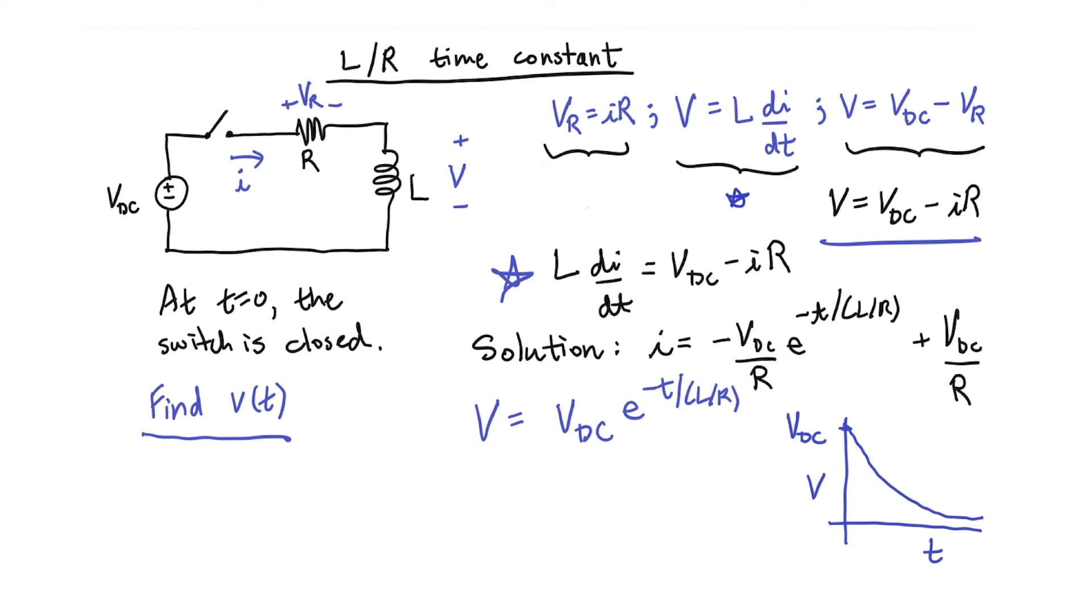So the reason why the video is called the L over R time constant is because in the equation for exponential decay, you can see that time is divided by L over R. And if time is in units of seconds, then L over R also has to be in units of seconds. And it turns out that indeed, henries divided by ohms is the SI unit of second.